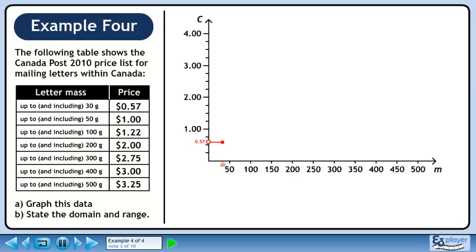The first row says that letters up to and including 30 grams have a price of 57 cents. We will draw a flat line as shown. Start with an open point since it's impossible to have paper with zero mass. End the line with a closed point since we want to include letters that weigh exactly 30 grams.